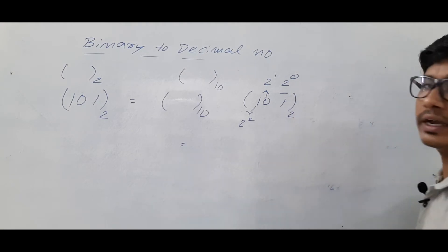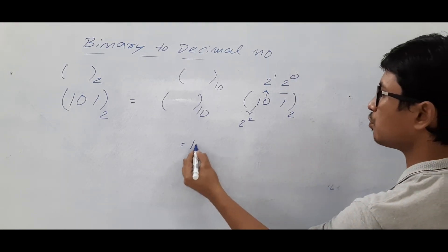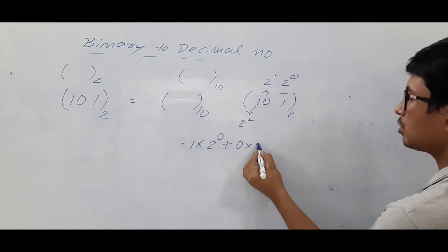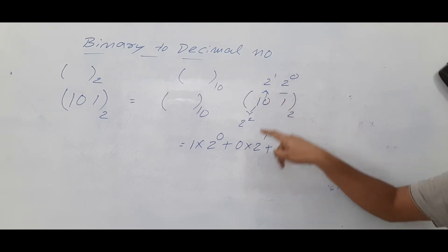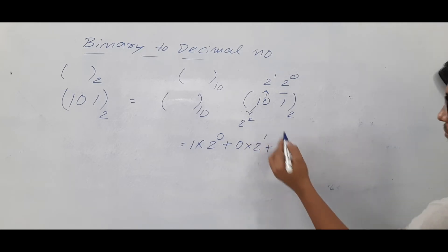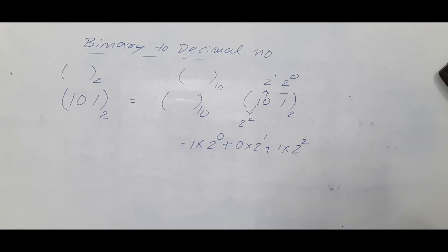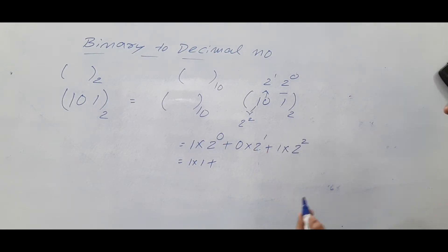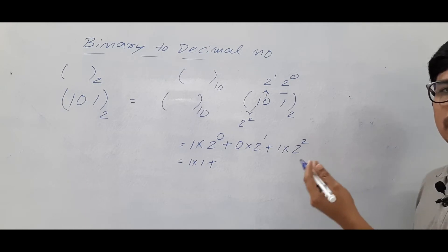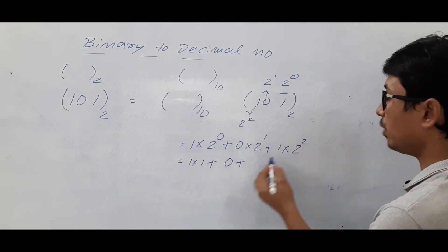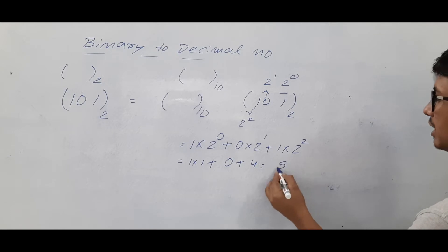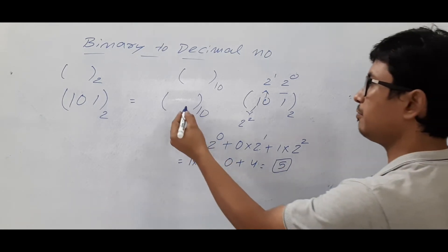Now take each digit and multiply by its weight: 1 × 2⁰ plus 0 × 2¹ plus 1 × 2². That gives 1 × 1 = 1, 0 × 2 = 0, and 1 × 4 = 4. Adding them up: 1 + 0 + 4 = 5.